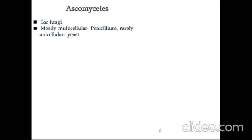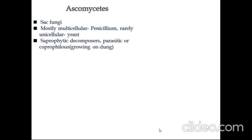The next class is Ascomycetes, also known as sac fungi. They are mostly multicellular, like Penicillium, or rarely unicellular, like yeast. They are saprophytic decomposers, parasitic, or can be coprophilous — growing on dung. Their mycelium is branched and septate.